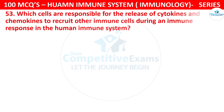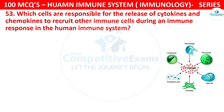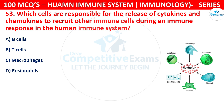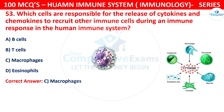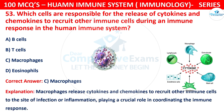Question number 53. Which cells are responsible for the release of cytokines and chemokines to recruit other immune cells during an immune response in the human immune system? The options are B cells, T cells, macrophages, or eosinophils. The correct answer is C, that is macrophages. Macrophages release cytokines and chemokines to recruit other immune cells to the site of infection or inflammation, playing a crucial role in coordinating the immune response.